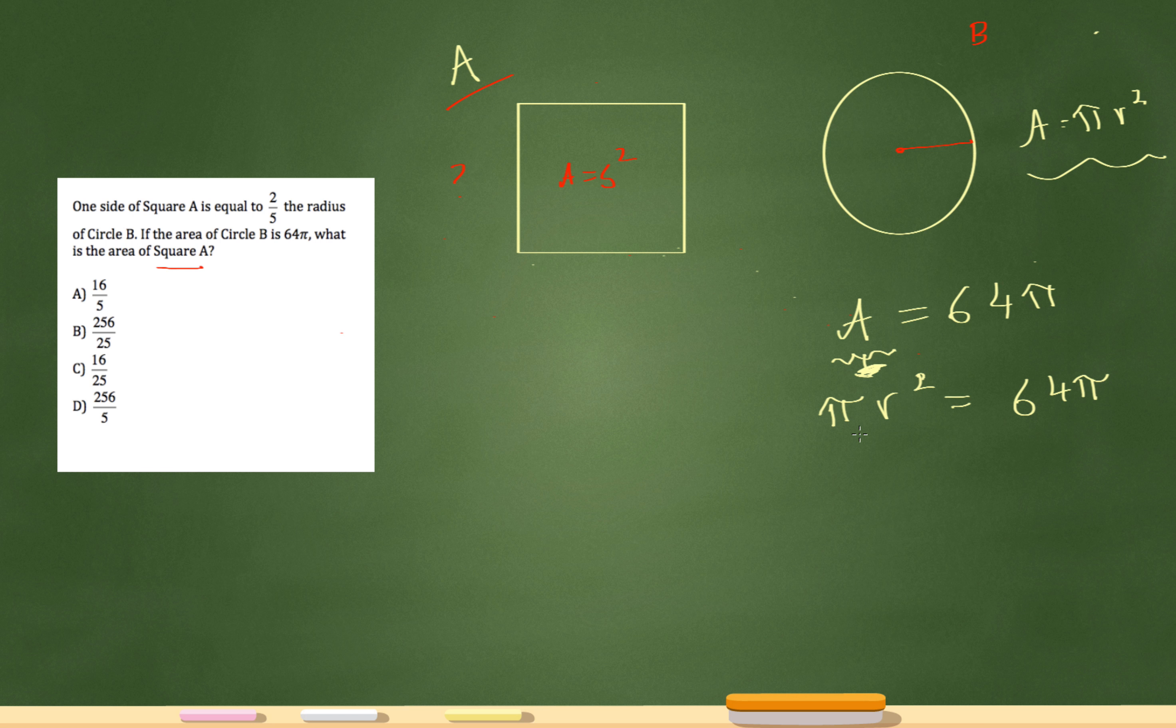And now I'm going to solve for the radius by dividing both sides by pi first. So that cancels that out. r squared now equals 64. And then r will equal the square root of that. r will equal 8. So now I know that the radius of the circle is 8.